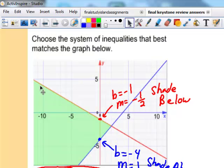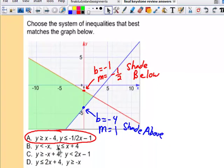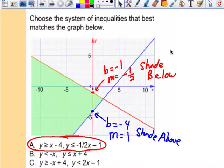Next one, shading a system of linear inequalities. First thing I would do before I even look at my choices - I know the y intercept for this solid blue line going uphill is negative 4. I can tell that my slope is positive, up 1 over 1, and I'm shading above. And the fact that the line is solid, I'm looking for a greater than or equal to sign.